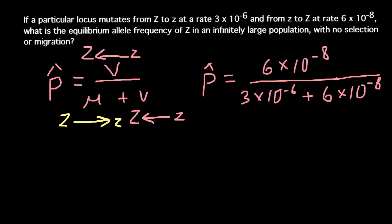So now we just need to use a calculator and find our answer. Our answer would be equal to 0.0196, and this is the frequency of the dominant allele Z. If you need an answer in percentage form, just multiply this number by 100. If you want to know the frequency of the small z alleles, just subtract this number from 1.